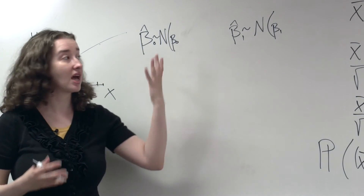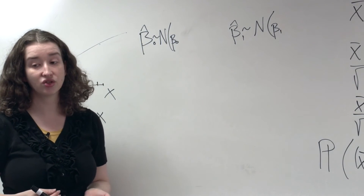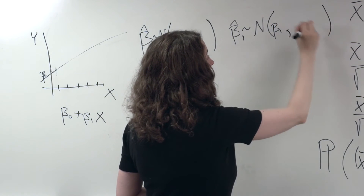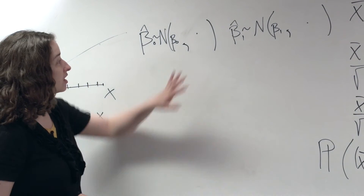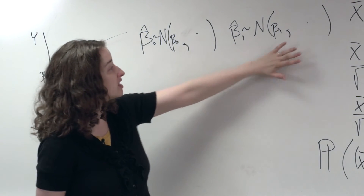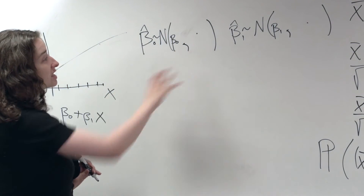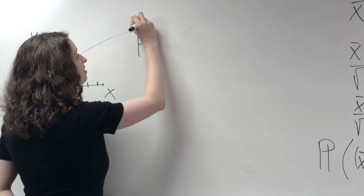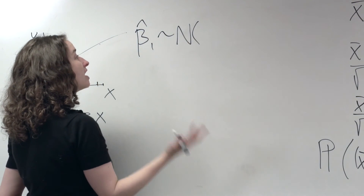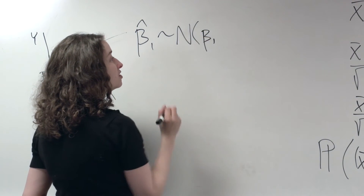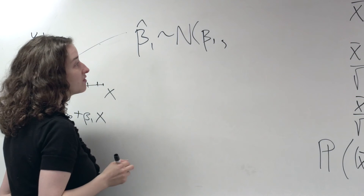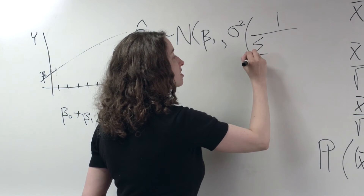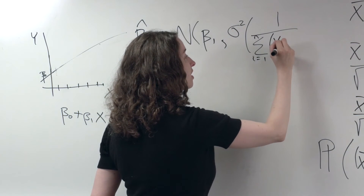Each of these quantities is unbiased, meaning that on average it equals the truth. And each would follow a normal distribution with some particular variance. Because we're more interested in the slope, let's focus on beta_hat_1. If we repeatedly sample data from the true line, beta_hat_1 will follow a normal distribution centered at the true slope with variance equal to sigma squared times 1 over the sum of squared differences in x.